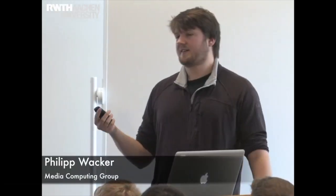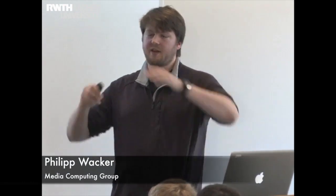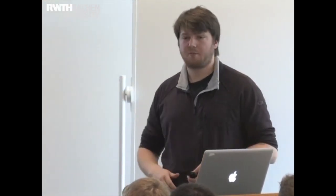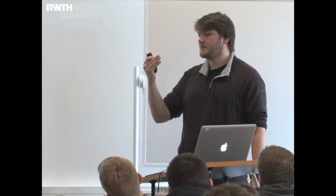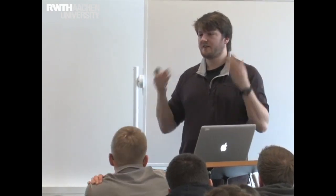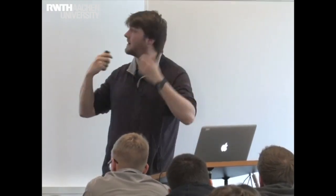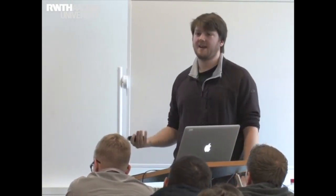This is quite curious. Imagine I darkened this room completely and showed you a flash of light for a short period of time. If I then showed a flash of light with 50% the intensity but for twice the duration, you would not be able to distinguish between those flashes, because the number of photons reaching your eye within 100 milliseconds is the same.